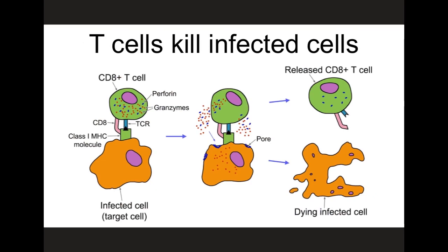Finally, antibodies represent just one arm of our adaptive immune response. The other arm is mediated by immune cells called T cells. While antibodies are important for preventing the infection of new cells, T cells play a critical role in clearing viral infections by seeking out and destroying cells with active viral infections. And antibody levels are not able to tell us anything about the T cell-mediated response, which will also be long-lasting.